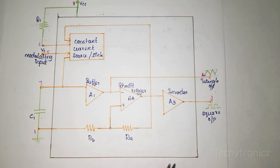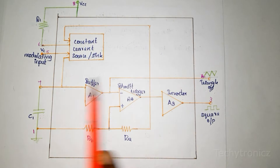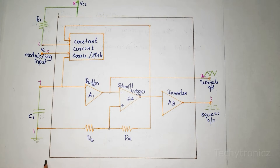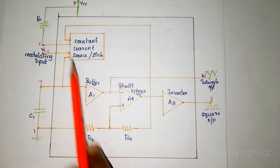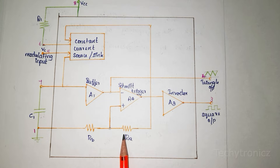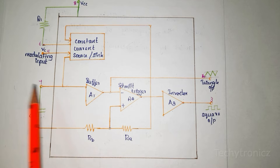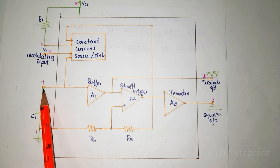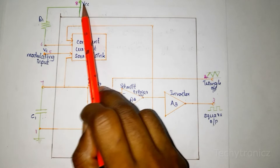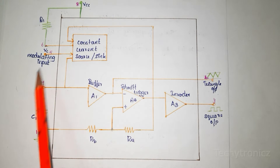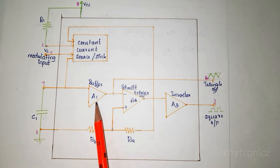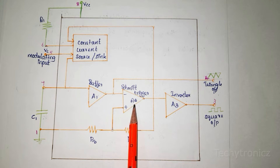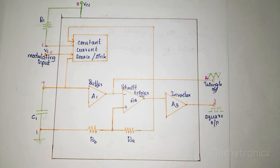Let's see the block diagram of VCO. Here R1 and C1 are the external components — shown in orange are all the internal components of IC566. The capacitor C1 is connected to pin 7, resistor R1 is connected to pin 6, power supply VCC is connected to pin 8, and control input voltage is applied to pin 5. Internally there are three amplifiers: a buffer, a Schmitt trigger, and an inverter.